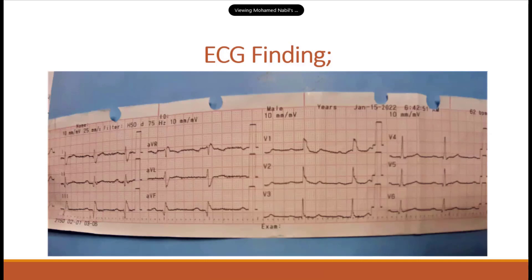ECG showed right bundle branch block and first-degree heart block. Axis deviation was almost right axis deviation by calculation of leads I, II, III, and aVF.